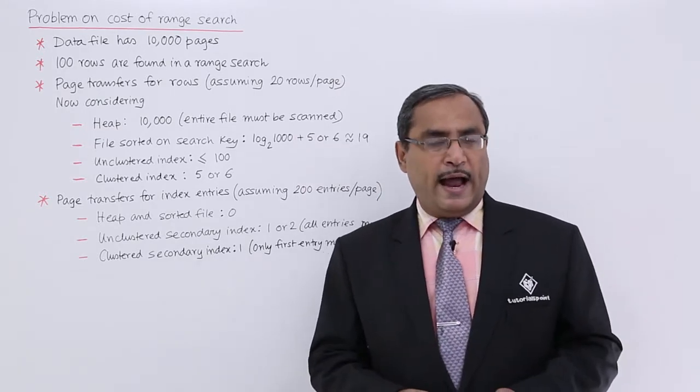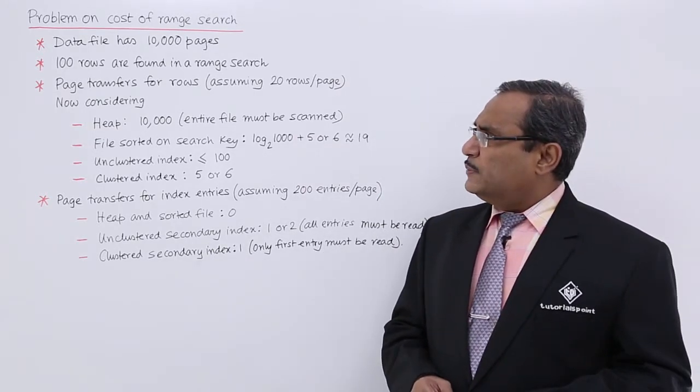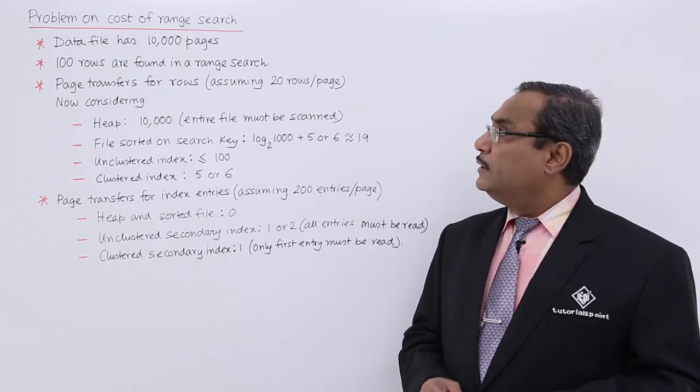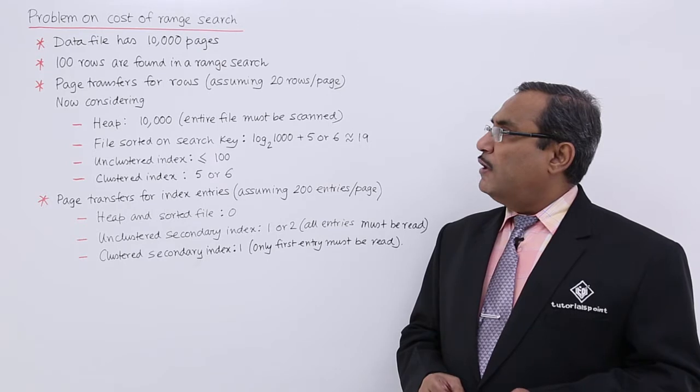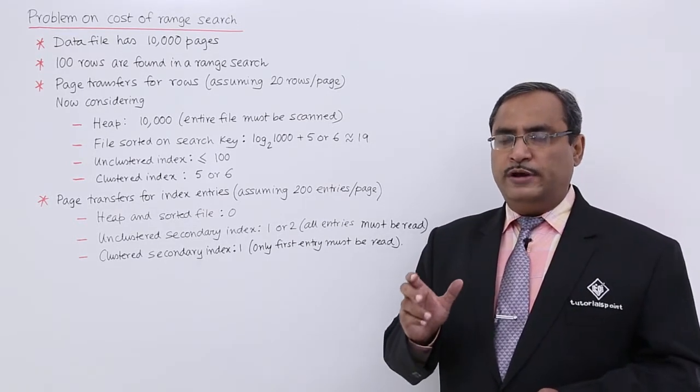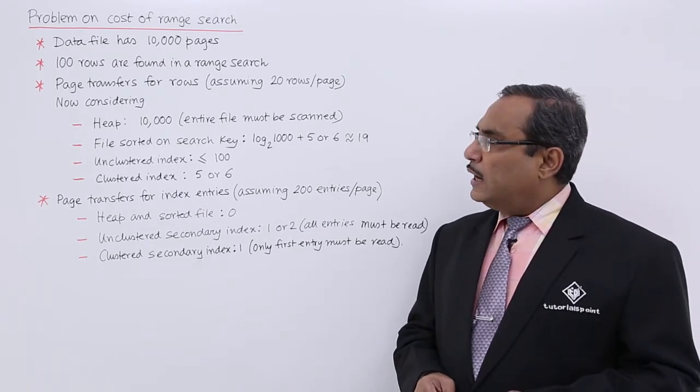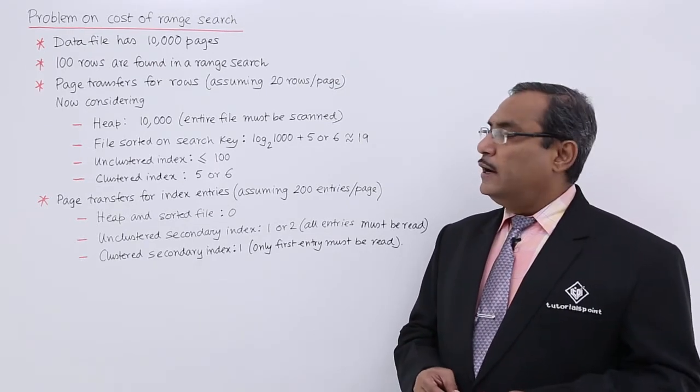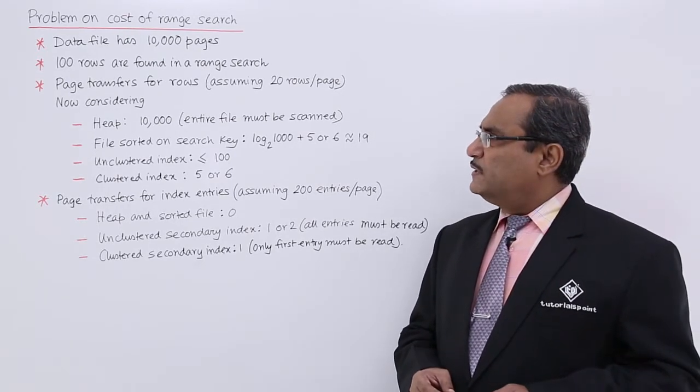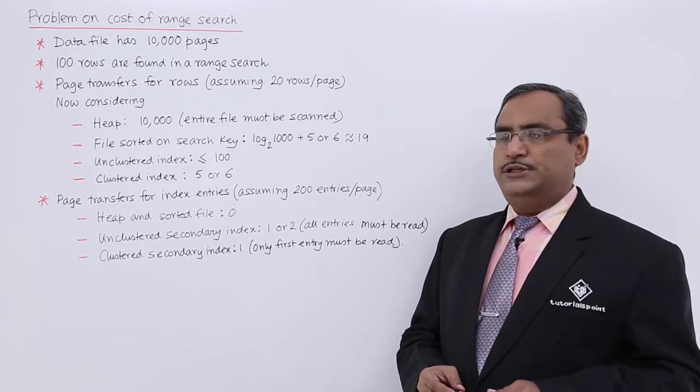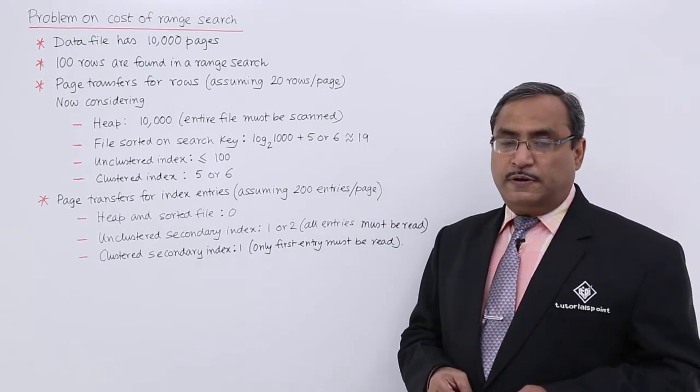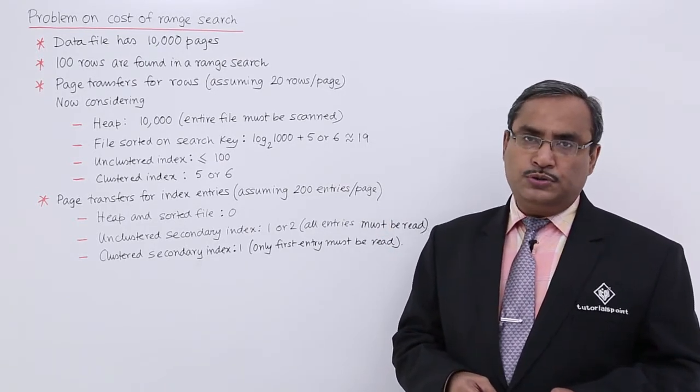Here is our given data and analysis. Let us suppose we are having a data file which is having 10,000 number of pages and 100 rows are found in a range search. According to the query we are going to retrieve 100 number of rows or records which are matching with the range search criteria. Page transfer for rows assuming 20 rows per page, so to read from the data file the corresponding page transfer for rows will be 20 rows per page.